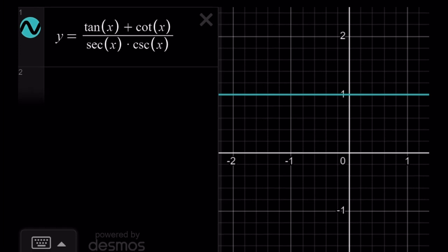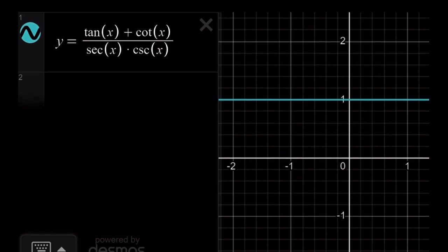Let's go ahead and take a look at the graph real quick. And we'll finish up. Here's the graph of y equals tangent x plus cotangent x divided by secant times cosecant. And yes, it is equivalent to y equals 1, except for which values this is undefined. And this brings us to the end of this video.